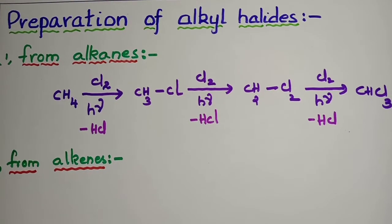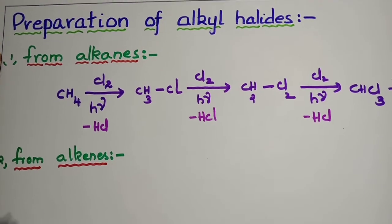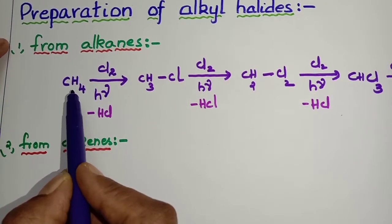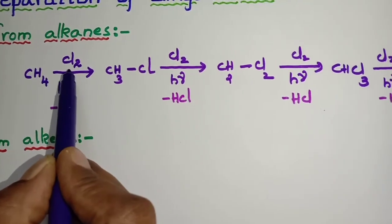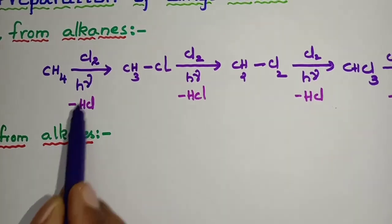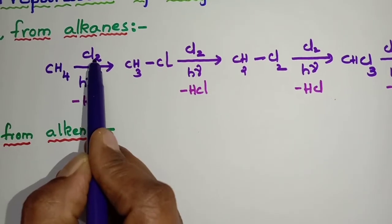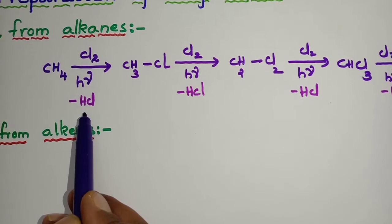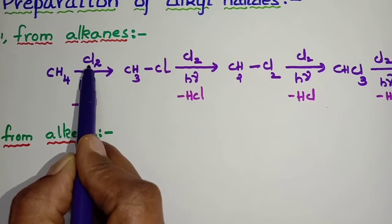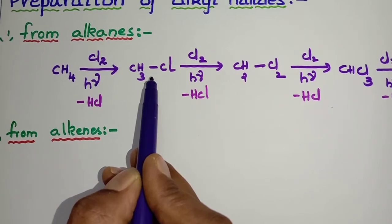Number one, the first method is from alkanes. The alkane we have taken here is methane, that is CH4. So how can we prepare alkyl halides from methane? Methane on chlorination — chlorination means addition of chlorine in the presence of light. One of the hydrogens and one chlorine comes out as HCl, and the hydrogen's place is substituted by one chlorine atom. Thereby we get CH3Cl, which is called chloromethane or methyl chloride.